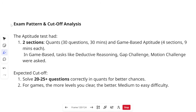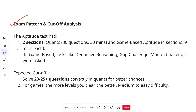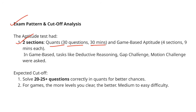Now let's talk about the exam pattern and cutoff analysis for the recent examination. In the aptitude test, you had two sections. The first is quantitative aptitude, which has 30 questions to be solved in 30 minutes. Many of you were asking whether you can use pen and paper. Officially it's a no, but it is fine for basic calculation — just take care that you don't move yourself too much. A little bit of movement is fine.